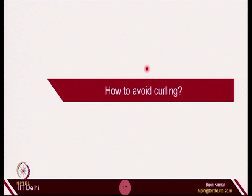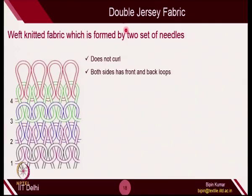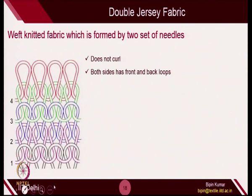To avoid curling, we have another category of fabric in knitting called double jersey fabrics. A double jersey fabric is formed by 2 sets of needles. Single jersey fabric is produced by 1 set of needles on 1 bed, but double jersey fabrics have 2 sets of needles requiring 2 beds. The beauty of this type of fabric is that it does not curl from any sides. Let's see this schematic of the fabric and observe how the loops look.